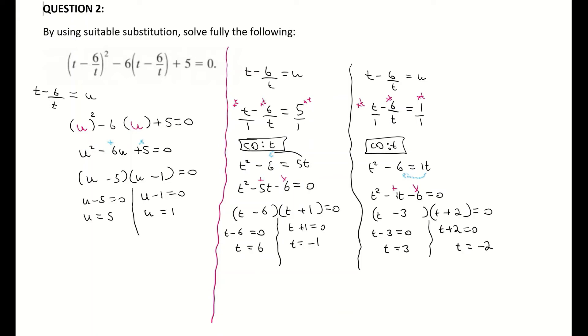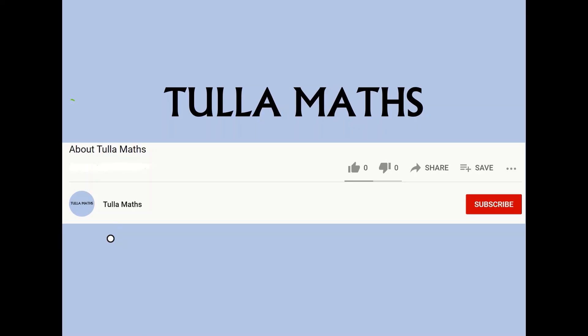So therefore my four solutions or possibilities of t are minus 2, minus 1, 3, and 6. And they are my final solutions for t. Thank you for watching another tutorial video from Tullamaths. Make sure and subscribe.